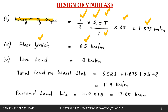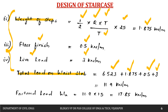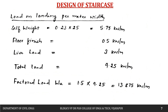Floor finish is 0.5 kN/m and live load is 3 kN/m. Adding all loads: 6.523 + 1.875 + 0.5 + 3 gives a total load on the waist slab of 11.9 kN/m. The factored load multiplied by 1.5 gives 17.85 kN/m.